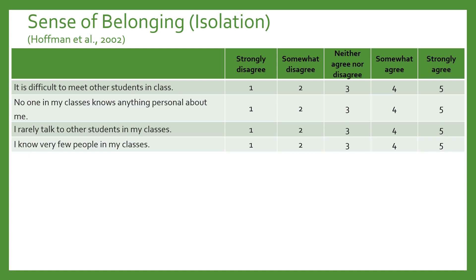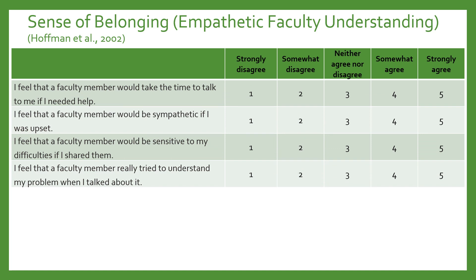Notice that the way this isolation subscale is scored, more agreement across the board results in higher scores, because all of these items are indicative of a stronger sense of belonging — higher scores mean more belonging. Here's another subscale: empathetic faculty understanding, looking not just at faculty support but whether faculty really care about you and are sensitive to your unique needs. Higher scores mean more empathetic faculty understanding.